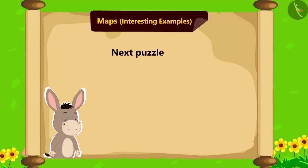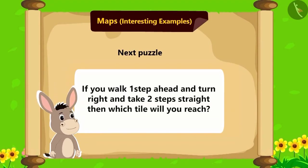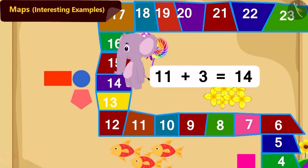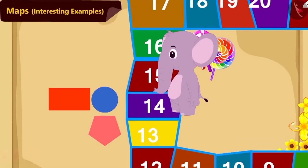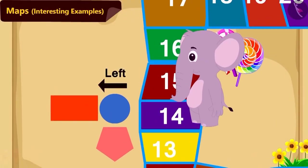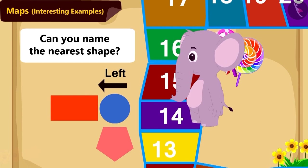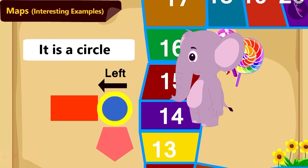Let's see what is Bholla's next puzzle: if you walk one step ahead and then turn right and take two steps straight, which tile will you reach? Children, can you help Appu? Absolutely right — Appu will reach tile number fourteen. On the left side of tile number fourteen are paintings of three shapes. Among them, can you name the shape nearest to number fourteen? Yes, it is a circle.